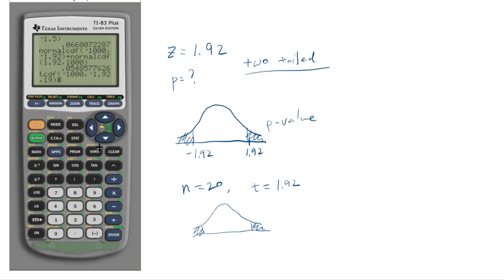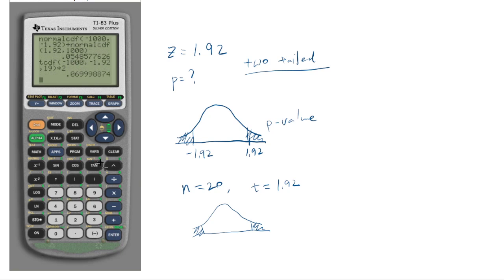You should also add tcdf(1.92, 1000, 19) for the right tail. But since both tail areas are equal by symmetry, you can just multiply the left tail result by 2 to get the p-value for the t-distribution.